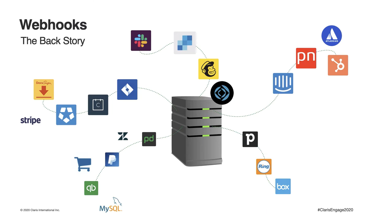For instance, we don't want to deal with the regulations around credit card storage, so we use a payment processor. Same with an accounting package — we don't want to recode all of the accounting rules. Or you have a web store and take orders online, or you use Box or Dropbox for document management. All of these systems generate data that you will want to use without any user intervention — automatically, in real time, because responsiveness is important.